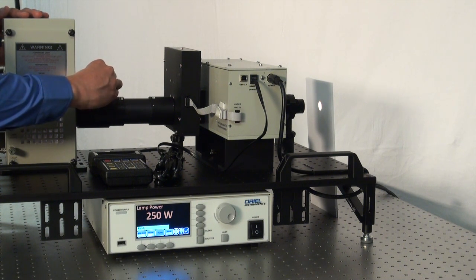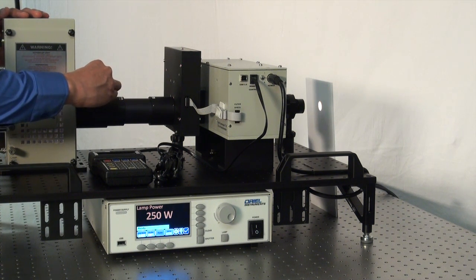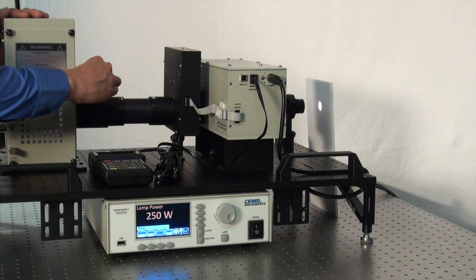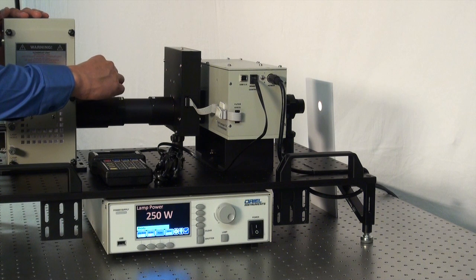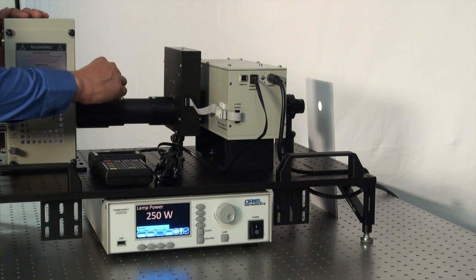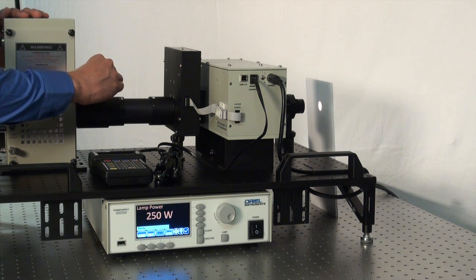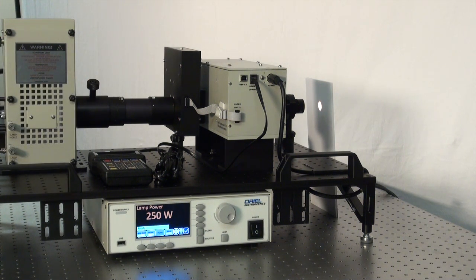This may take some adjusting as well, but adjust the lever until you get a uniform, perfect spot size on the output of your backdrop. And once you find that position, turn the knob to the right and fix the position of this focusing lens assembly. And you've just aligned your tunable light source.